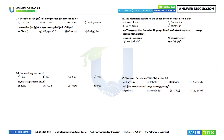33rd question: The rate of rise or fall along the length of the road is called gradient. Option B. 34th question: The National Highway Act is for the year 1956. Option D is the correct answer.